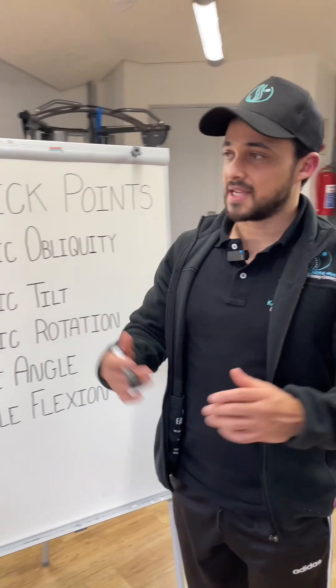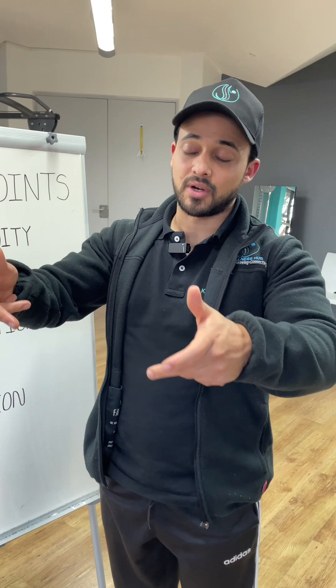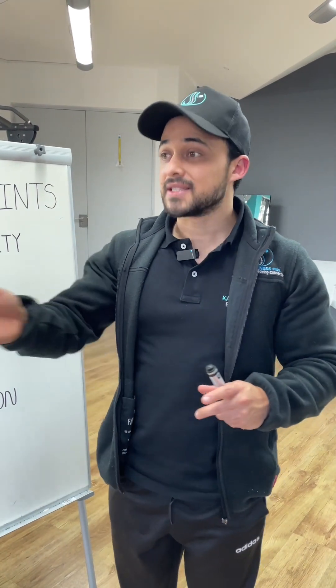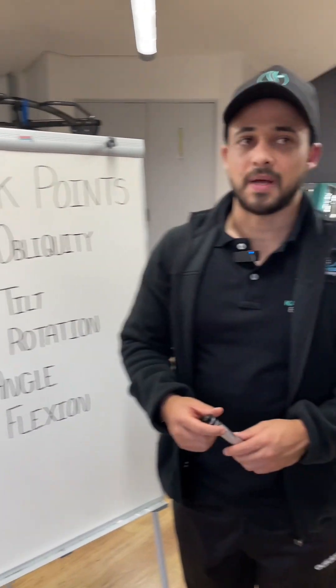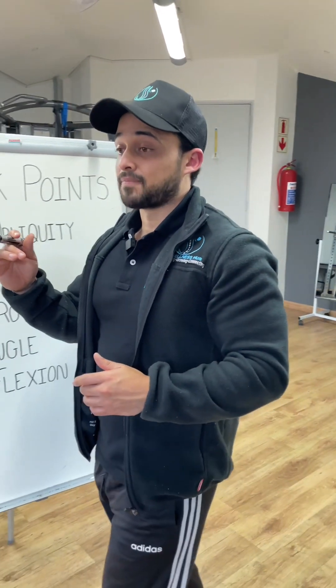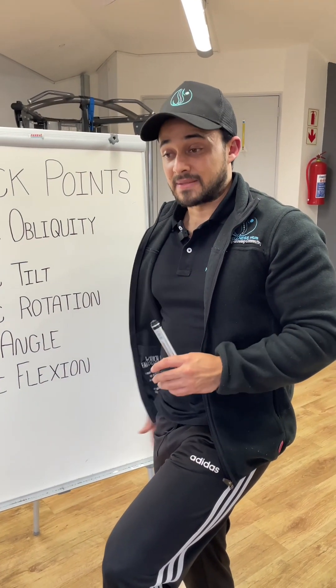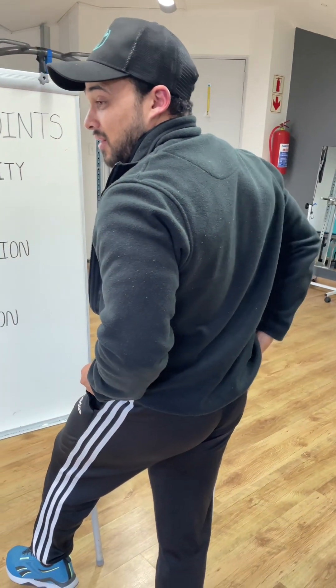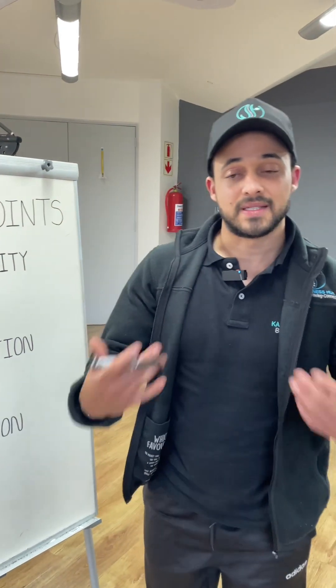Pelvic tilt refers to whether the pelvis is rotated forward — anterior orientation — or tilted backward — posterior orientation. Most people who over-stride go into anterior orientation, which increases lordosis or lower back curvature and leads to poor running efficiency. Pelvic rotation is what happens to the pelvis as you run. If there is pelvic instability, the pelvis will dip toward the stabilizing leg, indicating a lack of stability on that side.